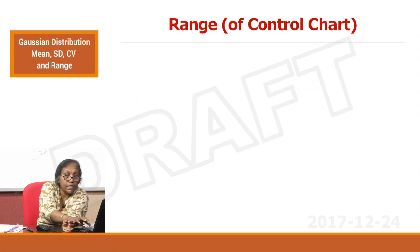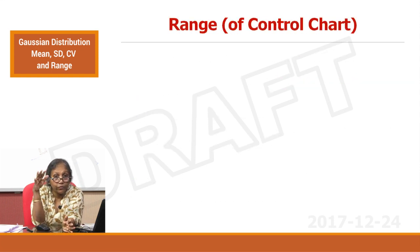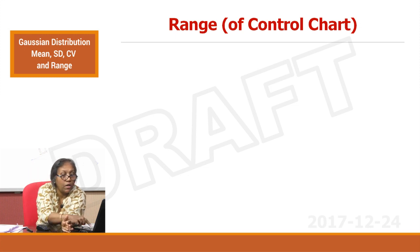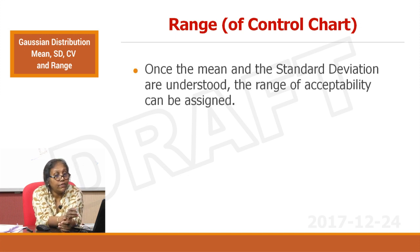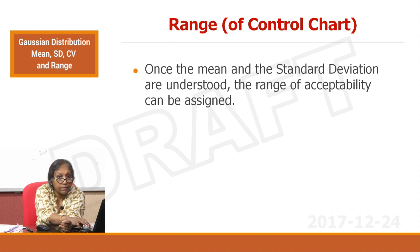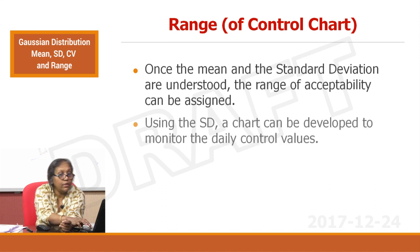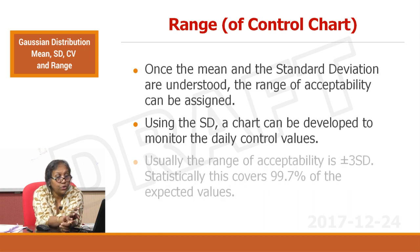We have seen the probability chart where the rule of 68-95-99 was established. We are going to use that rule in defining the control chart. Once the mean and standard deviation are understood, the range of acceptability can be assigned. Using the SD, a chart can be developed to monitor daily control values.